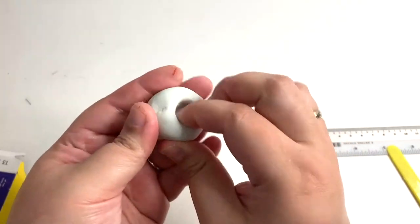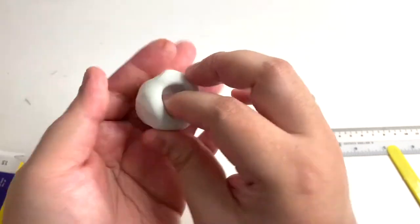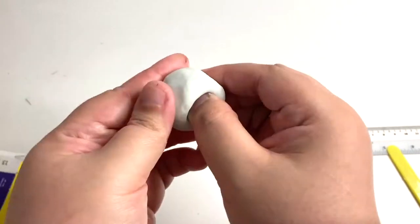Now, use your thumb and your index finger to pinch like this. Pinch only the walls of the pot and not the top part.